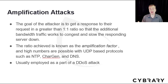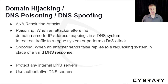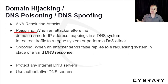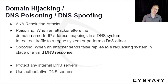Domain hijacking, DNS poisoning, and DNS spoofing take advantage of address resolution. DNS — the domain name system — translates common names and web URLs to their corresponding IP addresses. DNS poisoning occurs when an attacker alters domain name-to-IP address mappings in a DNS system to redirect traffic to a rogue system or perform a DDoS attack. DNS spoofing is when an attacker sends false replies to a requesting system in place of a valid DNS response. Protections include using your own internal or well-known DNS servers and authoritative DNS sources.